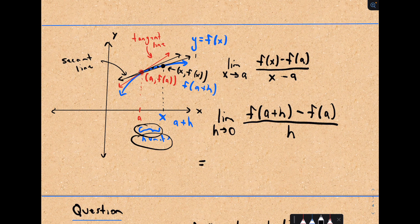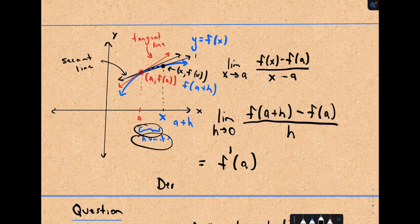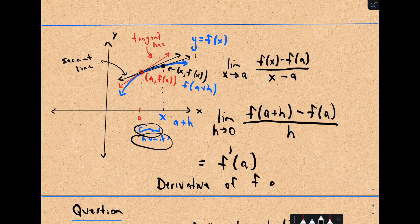These are the exact same definition. We call this definition, the notation is we write a little f prime, we call this a prime, f prime of a. That is the derivative of f at a.